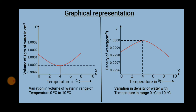On cooling water from 10°C, the density of water first increases up to 4°C and then decreases when it is cooled further below 4°C to 0°C. Thus, the density of water is maximum at 4°C, which is equal to 1 gram per centimeter cube.